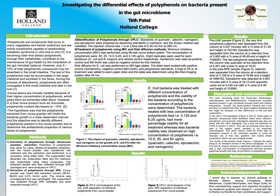In Figure 1, E. coli bacteria was treated with different concentrations of polyphenols and the viability of the bacteria according to the concentration of polyphenols was determined. Bacteria treated with lower concentrations of polyphenols — 3.125 and 6.25 µg/mL — had more percentage viability for all treatments, whereas less bacterial viability was observed at higher concentrations of polyphenols — 12.5, 25, and 50 µg/mL — for all polyphenols.